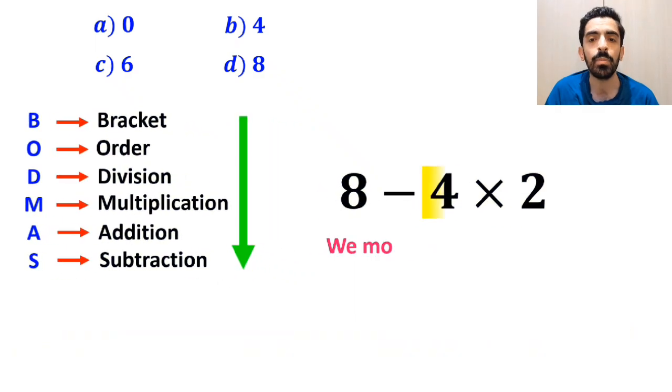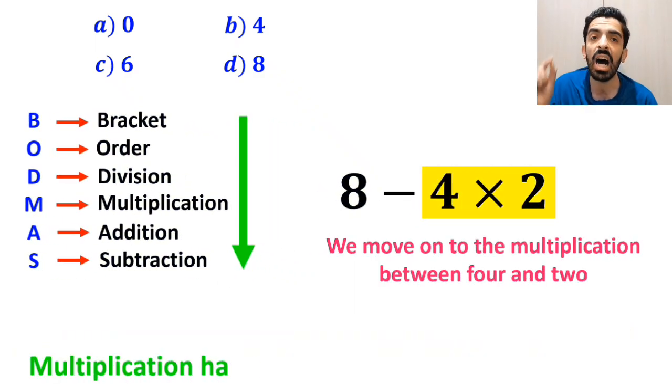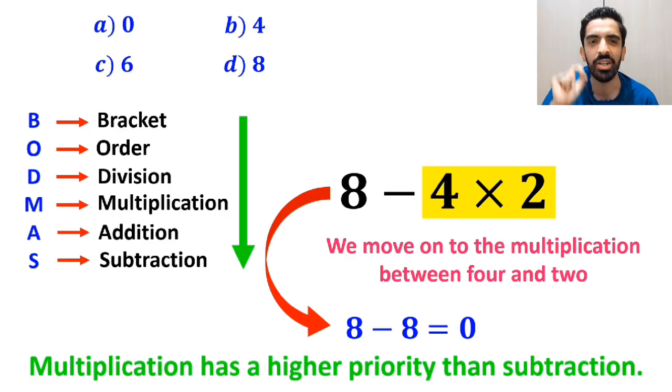Next, we move on to the multiplication between 4 and 2, because multiplication has a higher priority than subtraction. So, we write this expression as 8 minus 8, and finally, we get the answer 0.